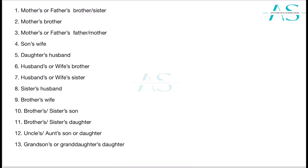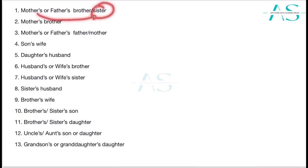Let's start with Part 1. Mother's brother — your mama ji. Your father's brother is your chacha or tau ji. Your mother's sister is your mausi.